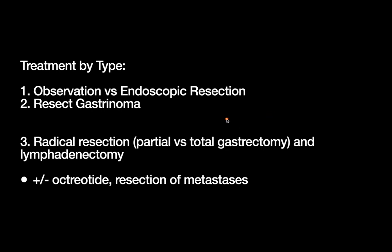When we talk about treatment, it splits significantly between the gastrin-driven and the more malignant types. For type 1 — related to atrophic gastritis and the chronic low gastric acid secretion leading to hypergastrinemia — you can actually just observe these tumors if they're small and asymptomatic. Or if they become symptomatic, you can do limited endoscopic resections during upper endoscopy.